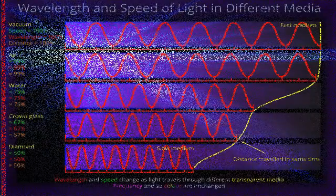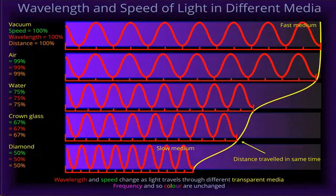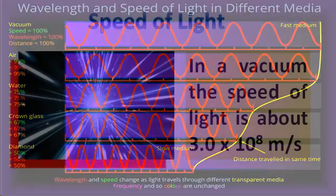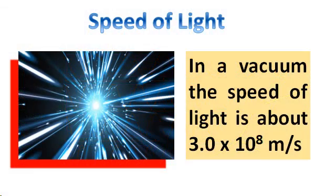Where does light travel fastest? The speed of light is different in almost every transparent material. In a vacuum, the speed of light is about 3.0 times 10 raised to the 8th power meters per second.